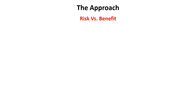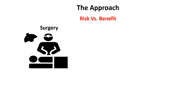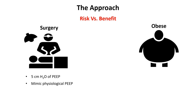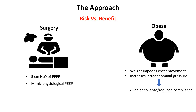PEEP settings should be tailored to each patient's specific needs and response to therapy. The benefits of PEEP must be carefully balanced against its potential drawbacks on the pulmonary, cardiovascular, and neurological systems. For normal patients undergoing surgery, PEEP of 5 cm H2O is usually used to mimic the physiological PEEP of normal spontaneous breathing. In obese patients, excessive chest wall weight reduces lung compliance and increases the tendency for alveolar collapse, so higher PEEP is beneficial. Studies suggest that PEEP greater than 10 cm H2O may be necessary to prevent atelectasis and optimize ventilation in obese patients.